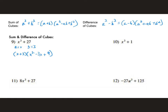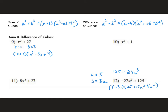For problem 12, the difference of cubes example: rewrite it as 125 minus 27u³. That makes a = 5 (since 5³ = 125) and b = 3u. Plugging into the difference of cubes formula gives (5 − 3u)(25 + 15u + 9u²). Try the other problems on your own and see how you do.